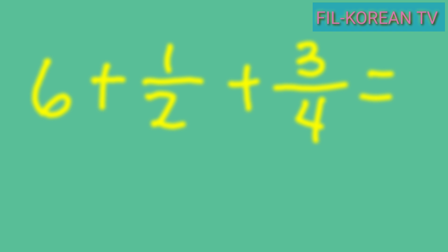Okay, let's start with this problem: six plus one half plus three fourths equals. In this problem, there is only one whole number, six, and two fractions with different denominators. So to solve this problem, we need to change the fractions to similar fractions.